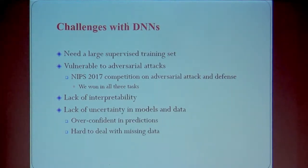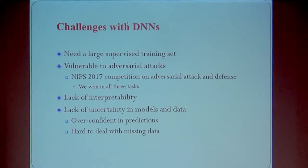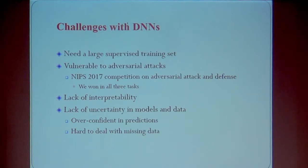There are some challenges. We need larger-labeled training data in order to learn. Also, this network can be vulnerable to adversarial attacks. In fact, there was a competition at IAPS on this particular task and we did some investigation. Also, deep networks are hard to interpret, and there is a lack of mechanism to model the uncertainty of the models and the data. It can be overconfident in its predictions, which may also be related to the existence of adversarial samples. It's also hard to deal with uncertainty in data for missing information.